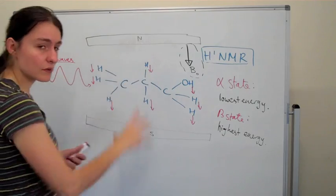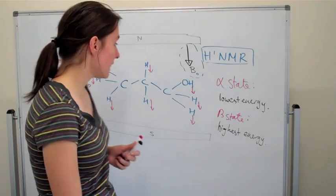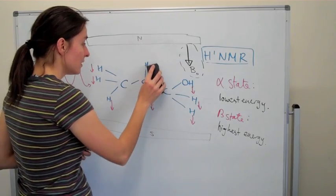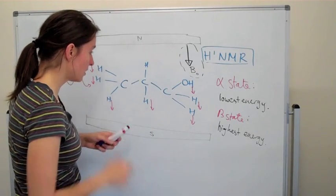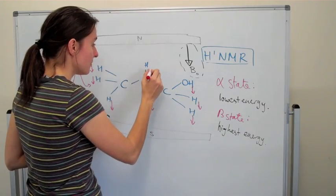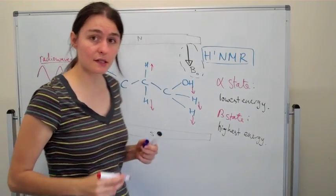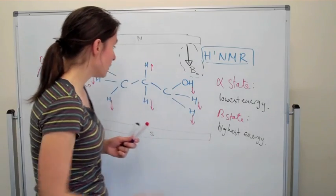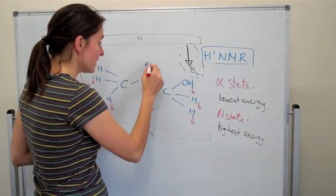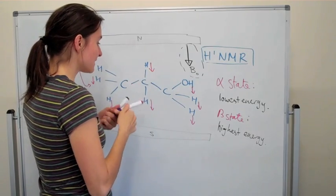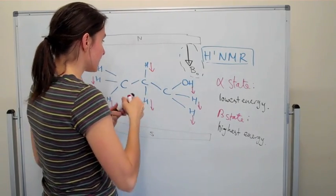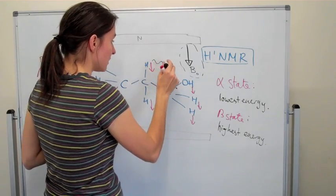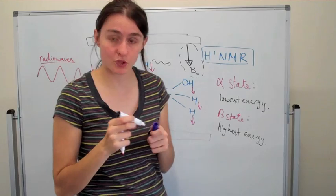Just to summarize, what's going to happen is that radio waves will be sent through this molecule and some of them, for example that hydrogen, may go into its beta state. Once it realizes that it cannot maintain the beta state it will come back down into alpha state and that will release a particular signal.